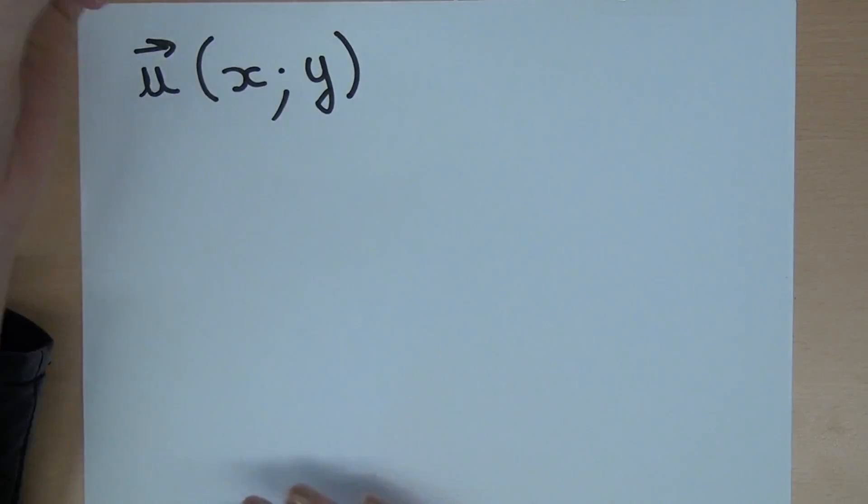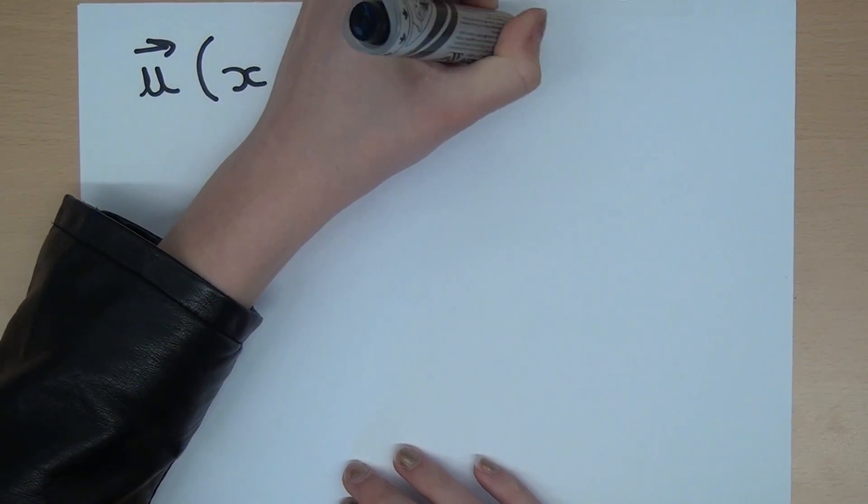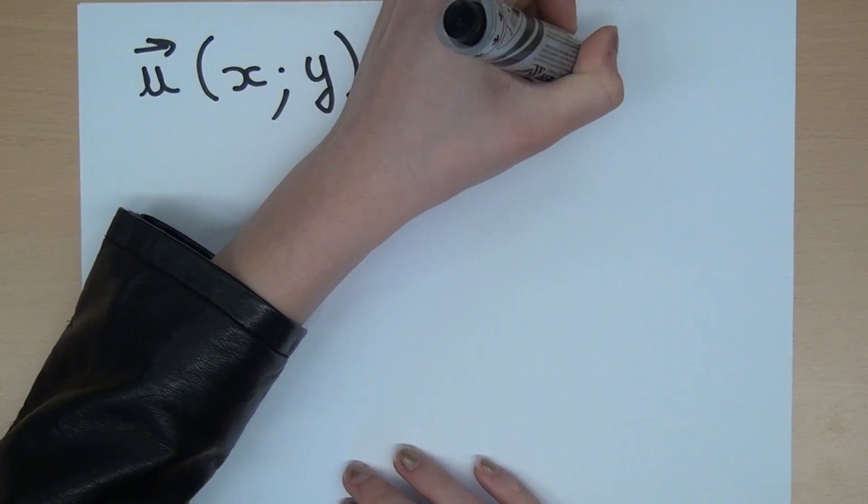Hello everybody, so today I'm going to show you how to prove that two vectors are collinear or not. We have two vectors u(x,y) and v(x',y').